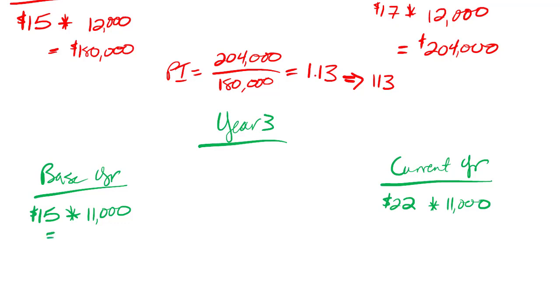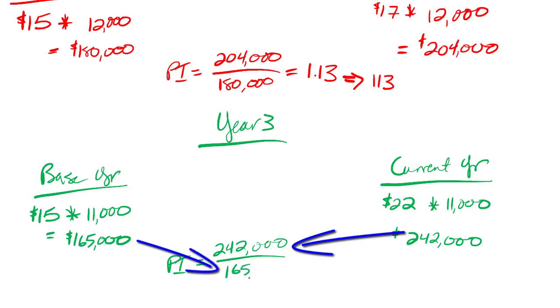So in year three, I have 11,000 units on hand. Let's see, 11,000 times $15 is $165,000, and 11,000 times $22 is $242,000. So my price index will be $242,000 divided by $165,000, or 147—147 percent, 1.47.